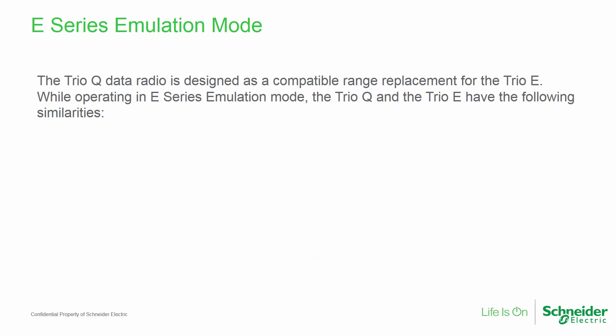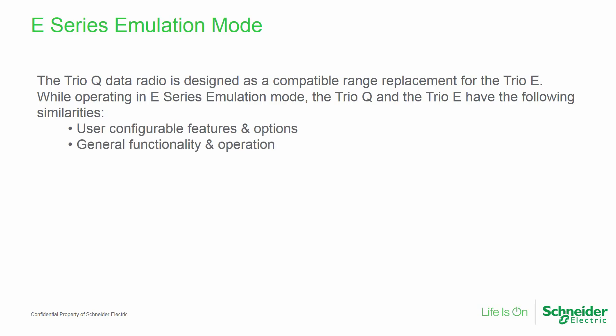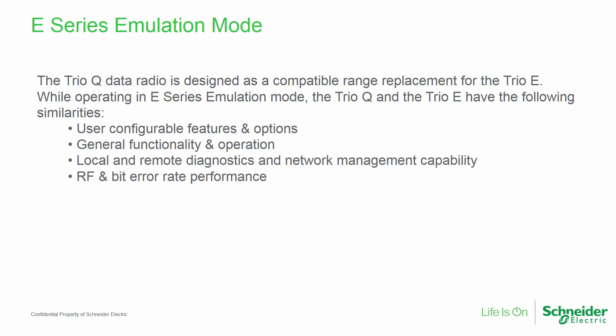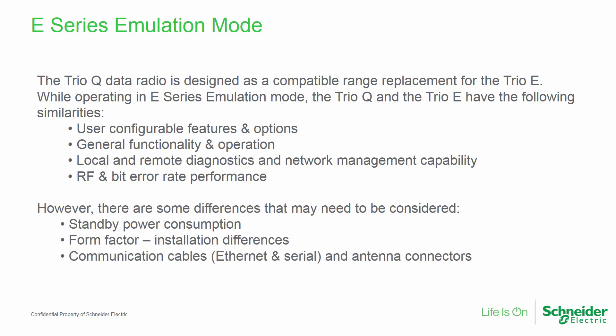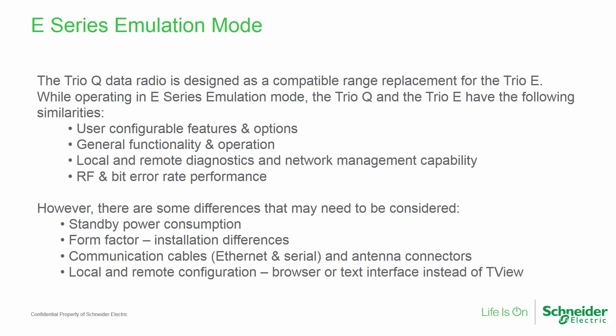The Q data radio was designed as a replacement for the TRIO E-Series. While operating in E-Series emulation mode, the TRIO Q and the TRIO E share the following similarities: user configurable features and options, general functionality and operation, local and remote diagnostics and network management capability, and RF and bit error rate performance. However, there are some differences that need to be discussed: standby power consumption, form factor, communication cables, antenna connectors, and the configuration interfaces used.